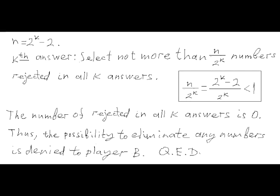Since n equals 2^K minus 2 in our scenario, the number of rejected numbers that player A has selected in K consecutive answers is less than 1, and therefore it equals 0. Thus, the possibility of eliminating at least one number has been denied by player A to player B. This proves the second part of this problem. We are done.